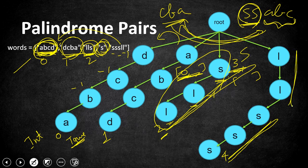This optimal Trie-based solution works in O(n × k²) time complexity, where n is the number of strings and k is the length of each string. Let's now go to the code.